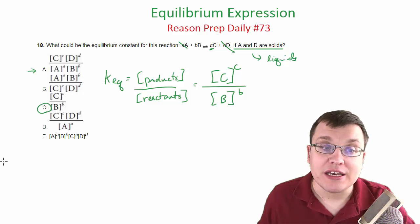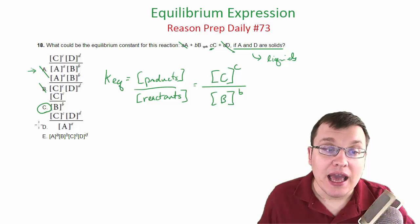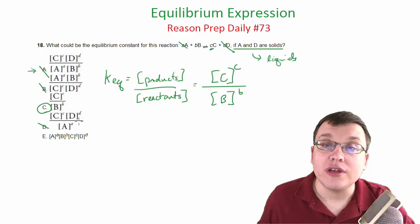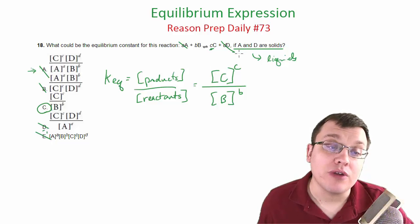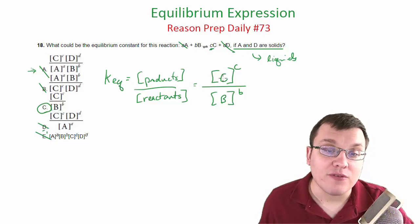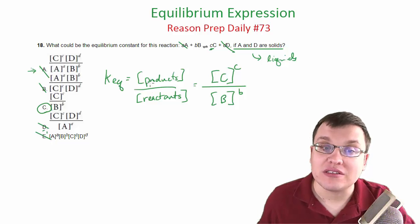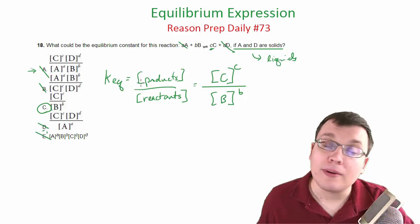And this would be choice C. In A and B and D, we include A and D, and in fact in E, we include A and D when we never should include A and D at all since they're solids. And of course, then we want to write it as C over B because that is how you write your equilibrium expression.